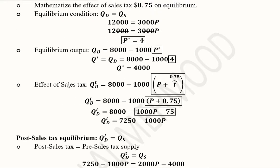Now we consider the effect of the tax on the equilibrium. Since it is a sales tax, it affects the consumer, so the demand function needs to be tweaked. We add the tax onto the price that the consumer is paying — if the consumer was paying the original amount, they now pay that amount plus the tax of $0.75.